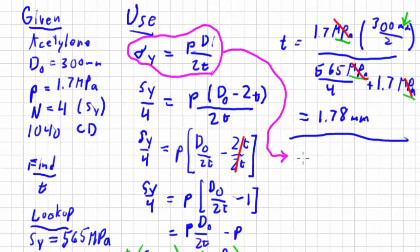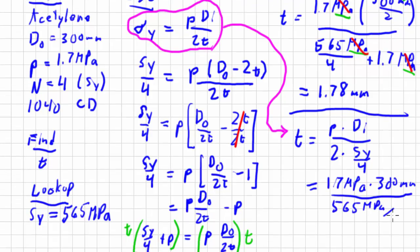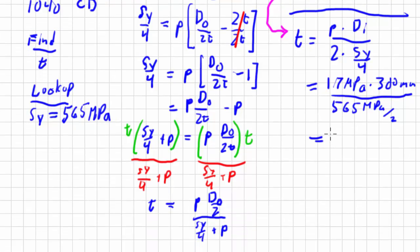So I'm going to take this equation here and bring it right there. And I'm going to rearrange it. I'm going to solve for t pretty easy. I'm going to multiply both sides by t, divide them by the yield strength. t equals p times the inside diameter, all over 2 times yield strength over 4. And that gives us 1.7 megapascals times 300 millimeters, all over 2 divided by 4 is, of course, 2. So we get 565 megapascals over 2, and that gives us 1.81 millimeters.